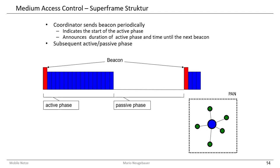The superframe structure is used in the ZigBee standard as the main structure of the packets. It consists of an active phase and a passive phase where you have no communication at all. The active phase is initiated by a so-called beacon packet, and then the participants can communicate actively. No communication is permitted in the passive phase. A central coordinator — a full function device — would not have to listen during the passive phase, so a data packet sent in the passive phase from a reduced function device to the full function device would not be received by the coordinator.